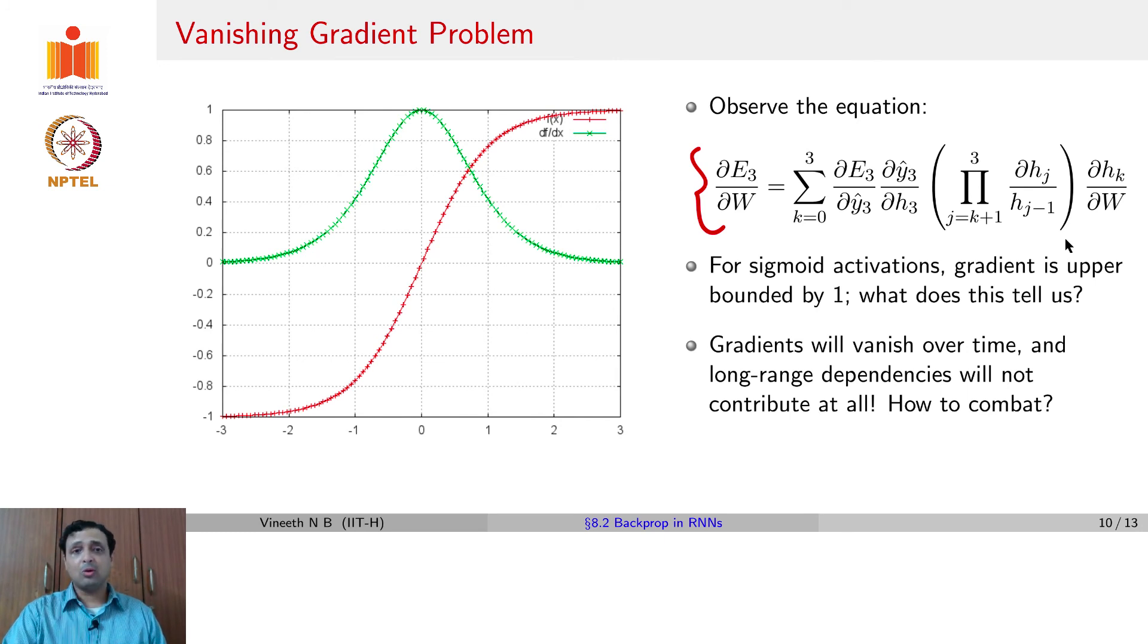So effectively, although you want RNNs to model long term temporal relations, you may not really be able to achieve that purpose, because of the vanishing gradient problem, because an earlier time step may not really influence an output at a later time step. How do you combat this problem? We will see this in the next lecture, there are already solutions for this problem. And we will see this in the next lecture.